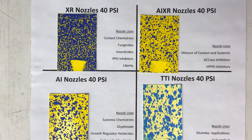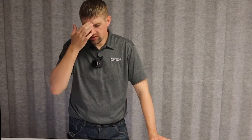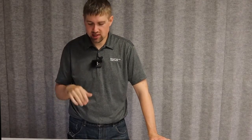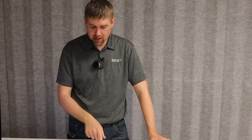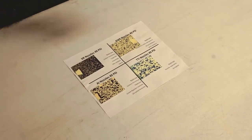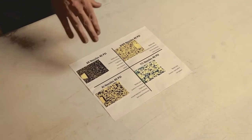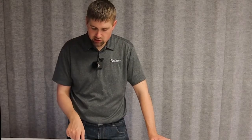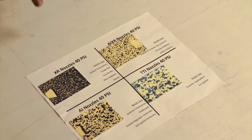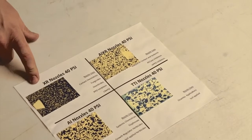Here are the results from our spraying demonstration. You can see we have four different nozzle types — an XR, AIXR, AI, and TTI — going to a larger and larger droplet size. The XR gives you really good coverage, but you also have an increased potential for drift.